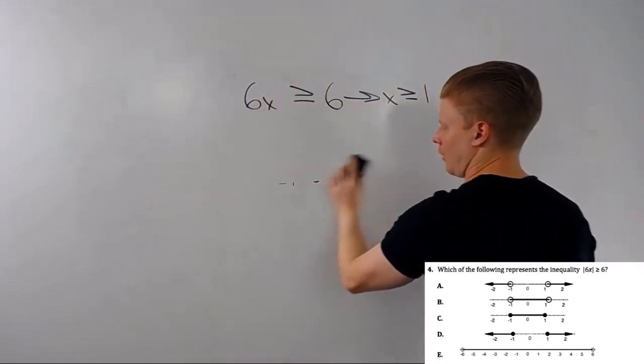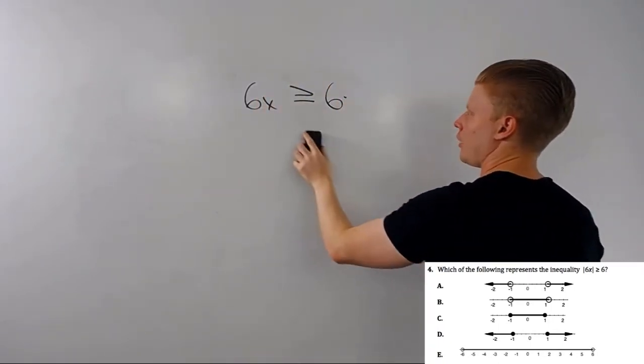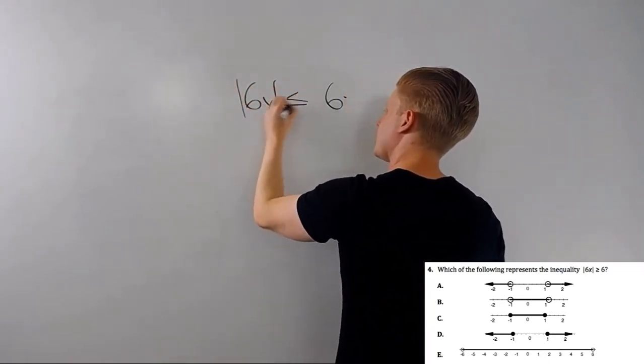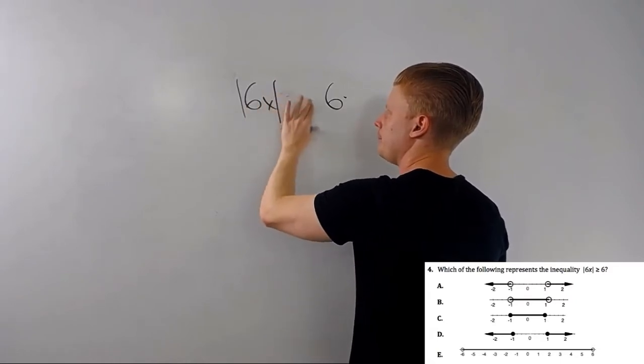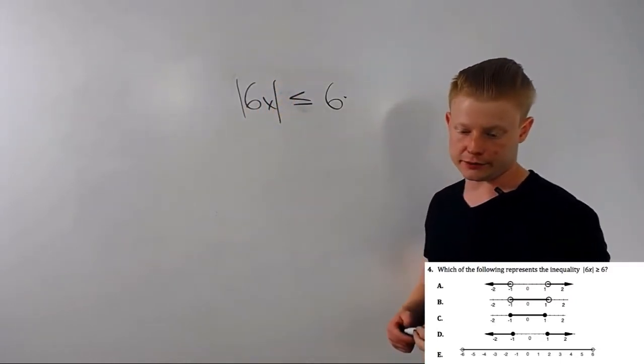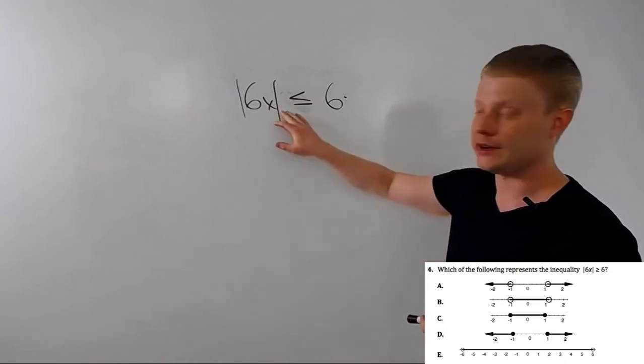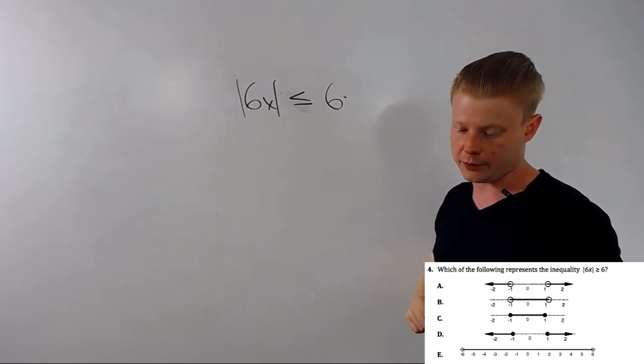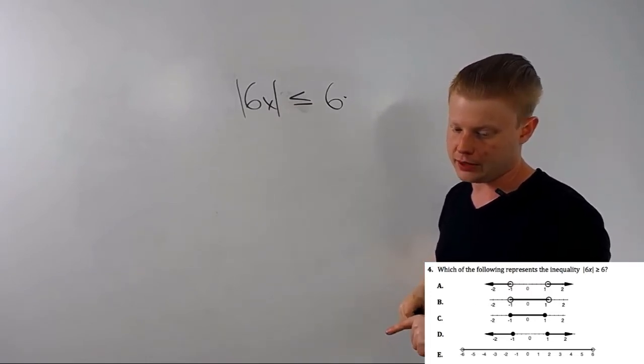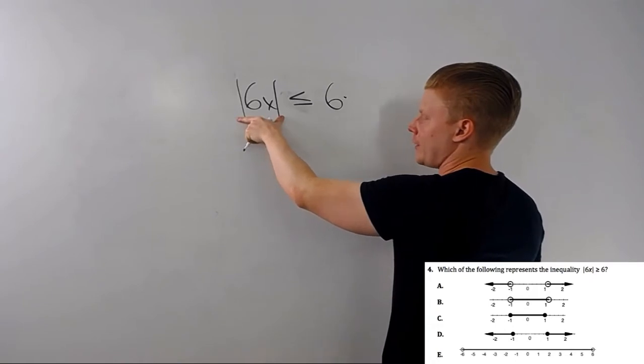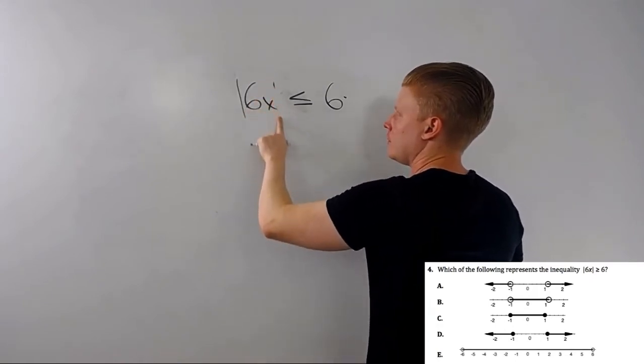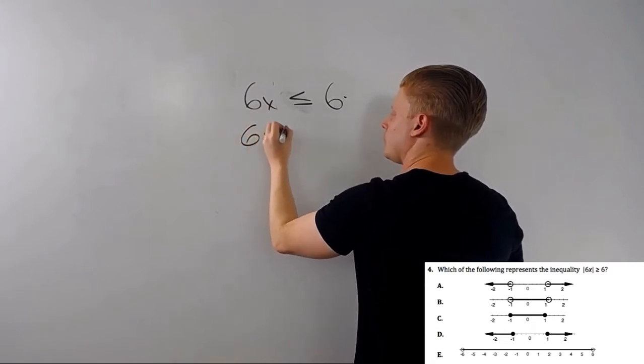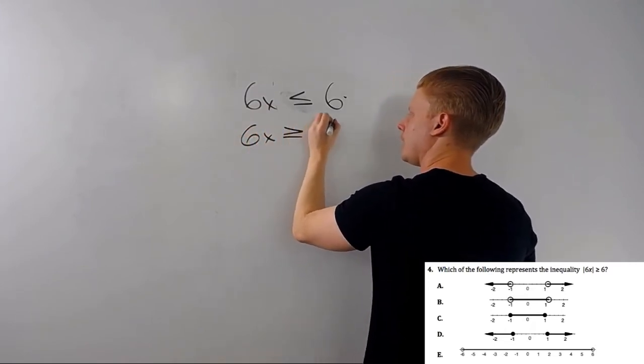On the other hand, let's redo this problem. Let's change this problem up. Let's say it's absolute value of 6x is less than or equal to 6. Flip the sign here. I'm not working on this problem anymore. I'm redoing it with the sign flipped. So, to remove the absolute value, I've got one that's done. To do the other one, I flip this inequality sign and I flip this sign.